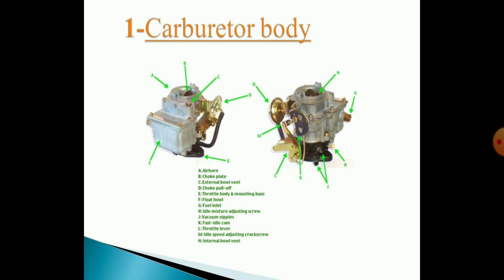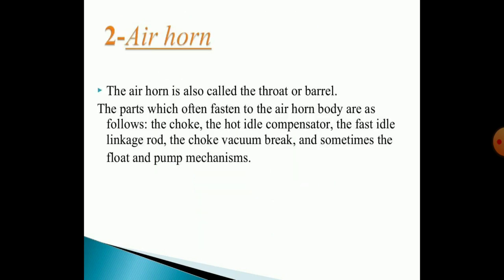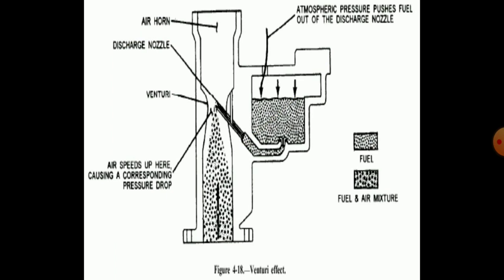You can see on your screen the carburetor body, where various precise parts are fitted, made up of highly finished material composed of various alloys. The air horn, also called the throat, is formed between the nozzle at the center of the convergent and divergent portion — we can also call it a barrel. The parts fastened to the air horn body include the choke, the hot idle compensator, the fast idle linkage rod, the choke vacuum brake, and sometimes the float pump mechanism. The line diagram shows how the air-fuel mixing process is done, with the throat position for the air-fuel ratio and mixing occurring at the exact point through the throat, parallel to the discharge nozzle.